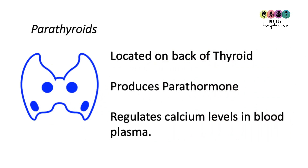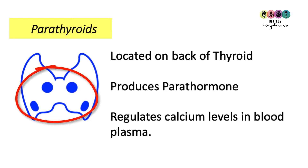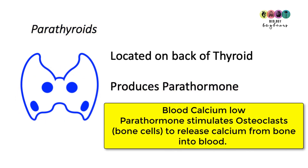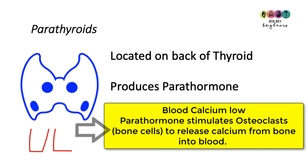On the back of the thyroid gland are four tiny glands called the parathyroids. They produce a hormone called parathormone, which is responsible for regulating calcium levels in the blood. When blood calcium levels are low, the parathyroids produce and secrete parathormone. It travels particularly to the bones, where it stimulates cells called osteoclasts to release calcium from the bones and put it into the blood.